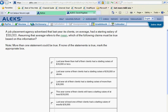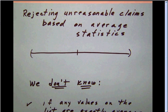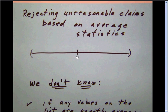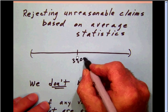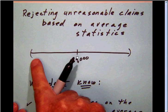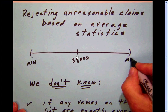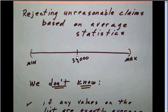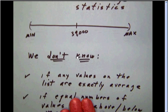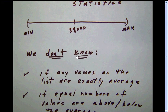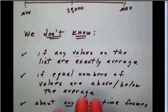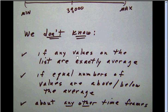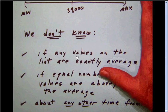We have the answer — we have the mean of thirty-nine thousand dollars. What they're going to do is ask us questions about the kinds of numbers on the list that produced this thirty-nine thousand as an average. First, what we do know: an average is a middle value. The thirty-nine thousand is somewhere between a minimum and a maximum value, but we don't know if it's exactly in the middle.